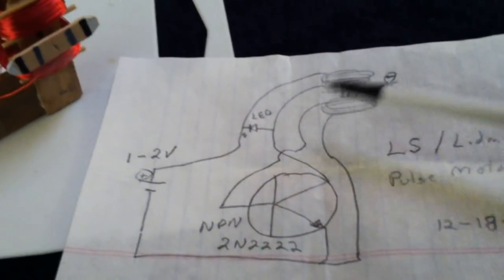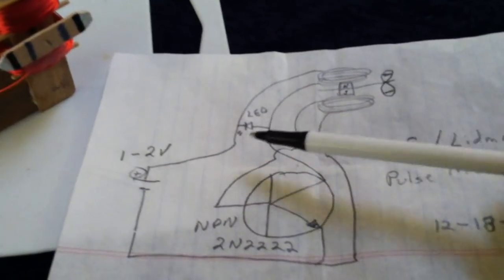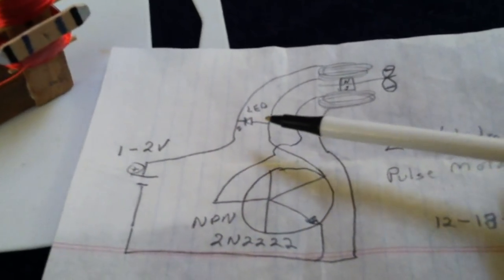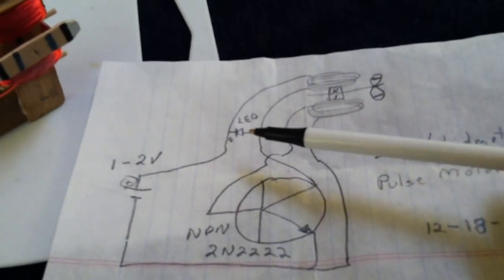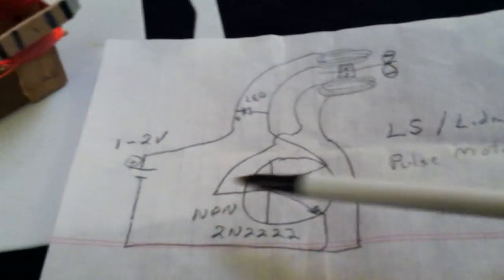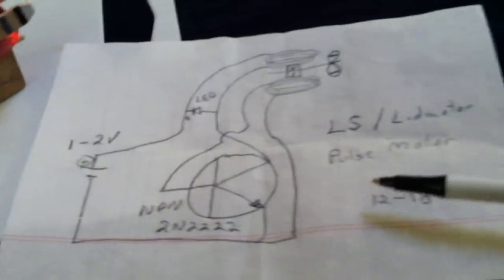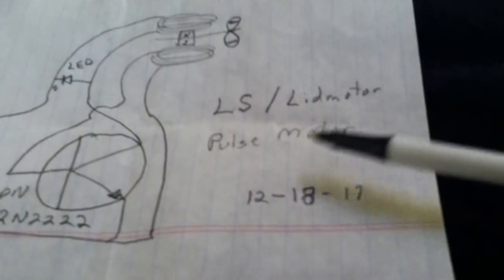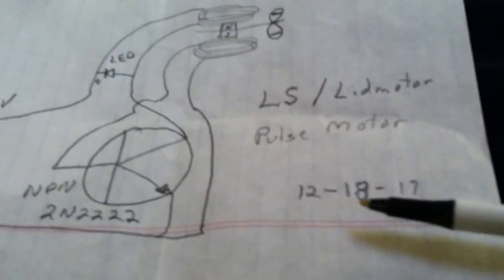You use an LED across the drive coil in the flyback mode to show the motor running, and it runs on 1 to 2 volts. You can run it on a super cap too, but I'm calling this the LS lid motor pulse motor.